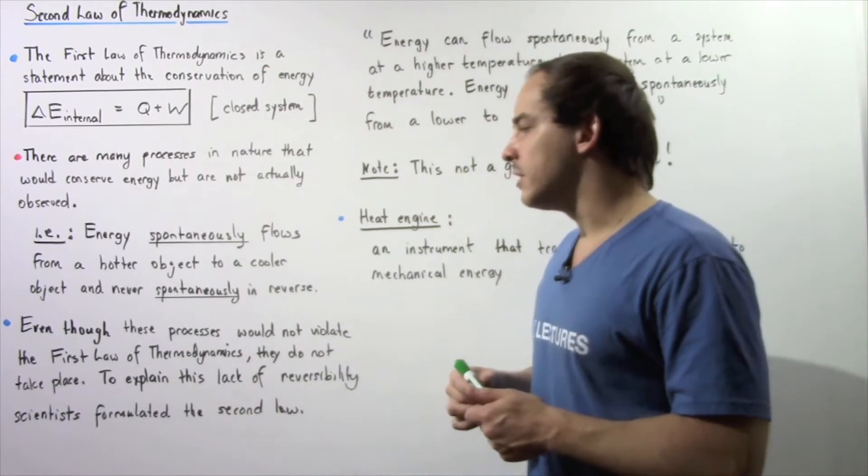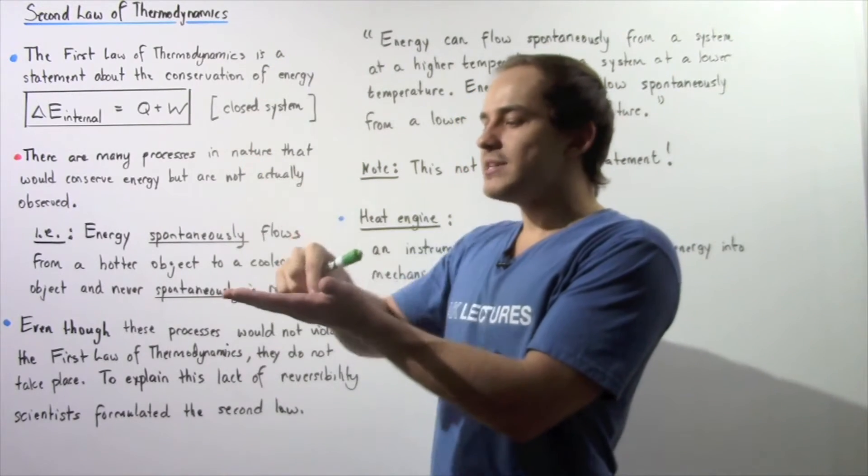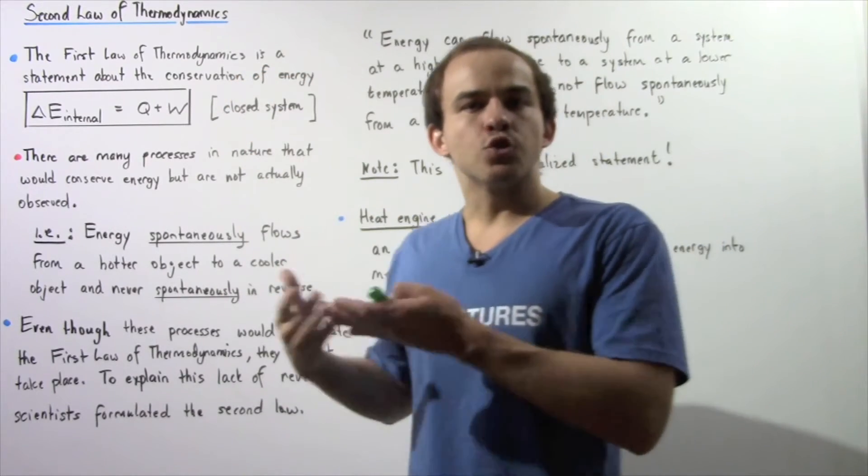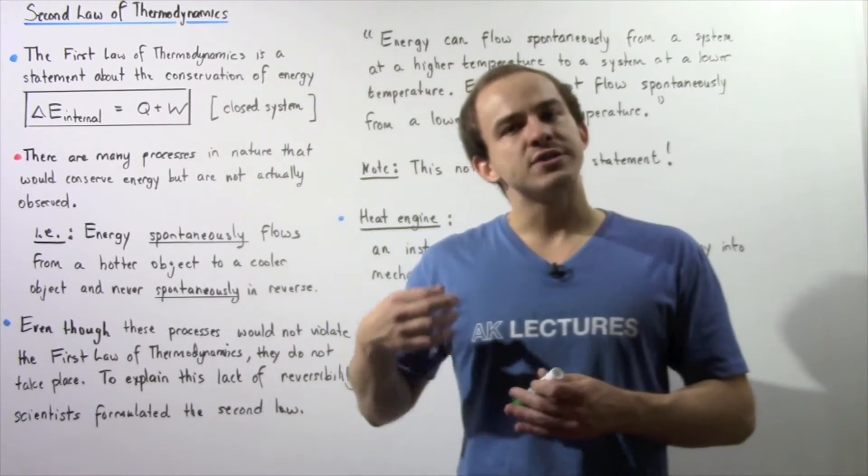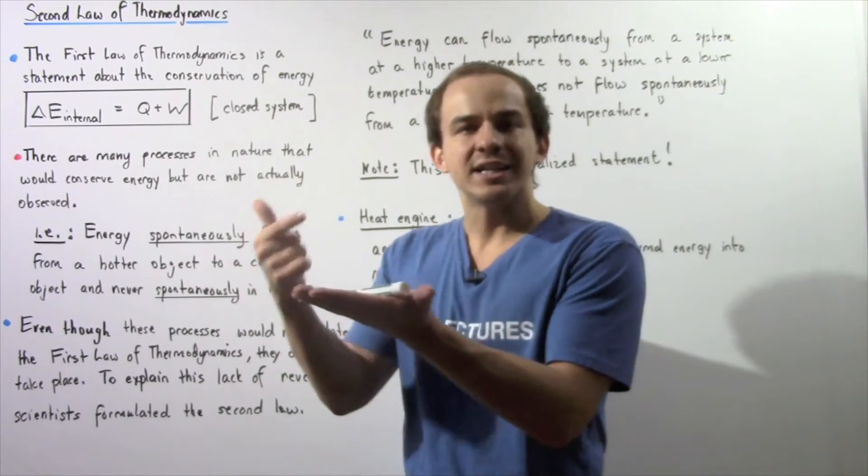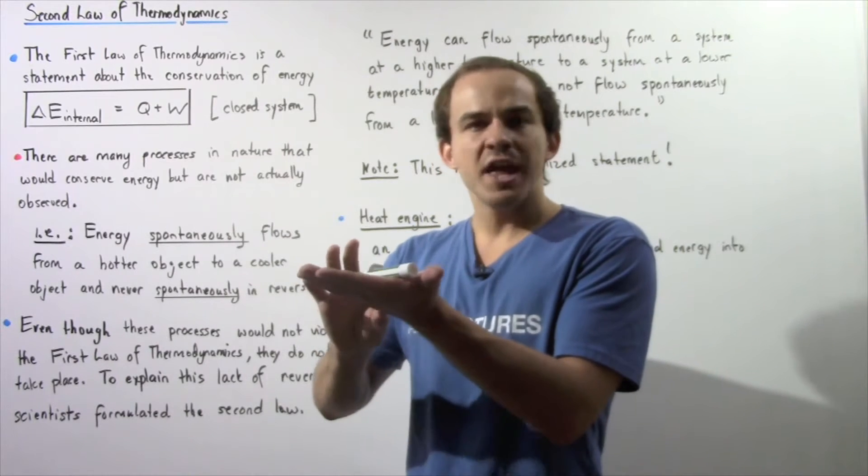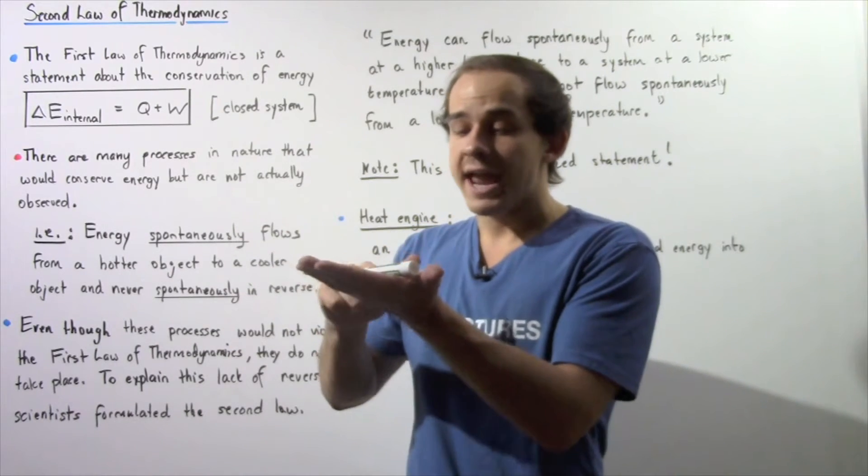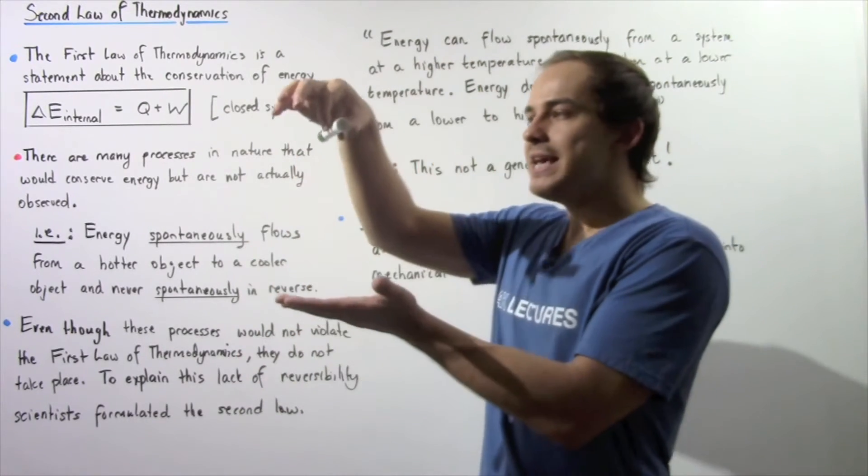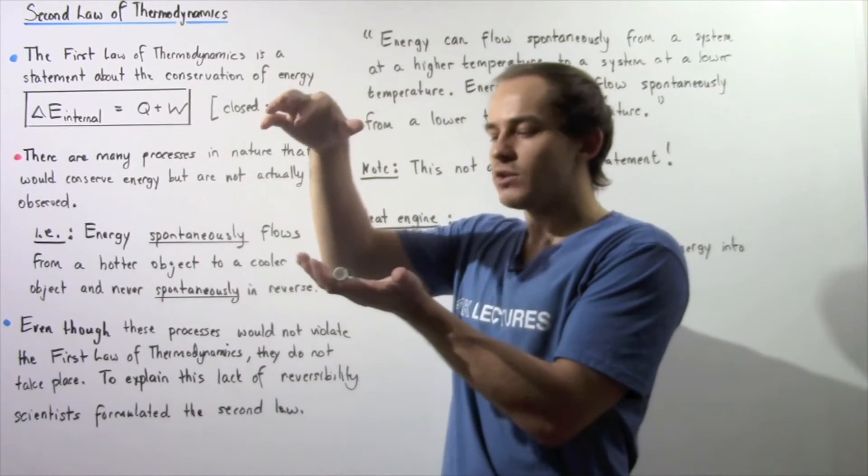Now let's consider a second example. Let's suppose we take an object and we raise the object a certain distance, let's say from my hand, and we let go. The object's gravitational potential energy will be transformed into kinetic energy. And when the object hits the ground, all that kinetic energy will be transformed into thermal energy of the hand and the marker. So the temperature of the hand and the marker will increase slightly. We see that this process takes place spontaneously without the input of any outside work.